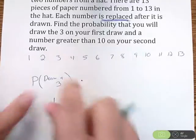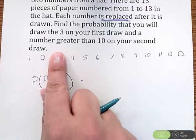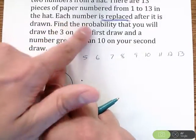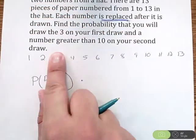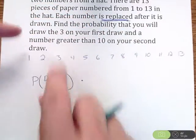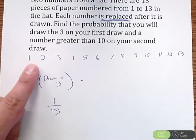But here's the deal. Say I draw this three, I pull it out of the pile, but the question says each number is replaced. So I took out the three, but now I put it back in. So that three is still in our sample space.